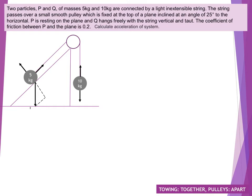In this question we've still got two particles connected by a pulley, but rather than one going horizontally and one vertically, we're now going to deal with the additional issue of an inclined plane. We're told it's inclined at an angle of 25 degrees. We're also told there's a coefficient of friction, so we'll have to consider friction for the particle on the slope. The 5kg particle on the surface has a normal force; the 10kg hanging in mid-air does not. Pause the video, try to add all forces onto the diagram, then unpause to check.